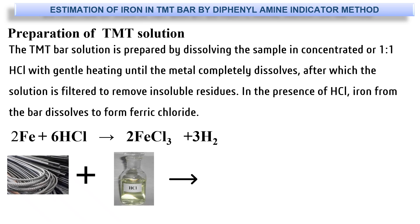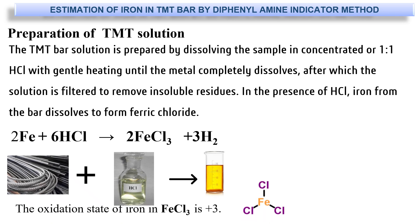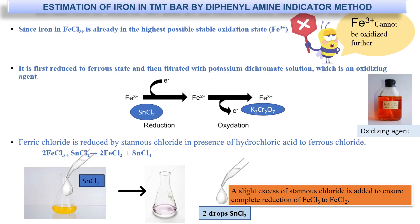In the presence of HCl, iron from the bar dissolves to form ferric chloride (FeCl₃). Note that the oxidation state of iron in FeCl₃ is +3. Since iron is already in its highest possible oxidation state, we have to first reduce it to ferrous state and then titrate it with potassium dichromate solution, which is an oxidizing agent.